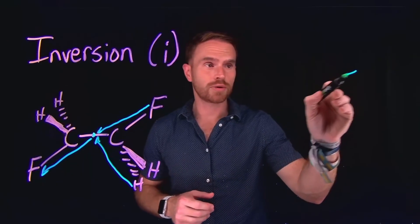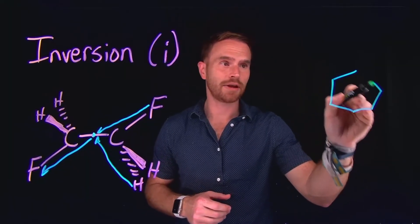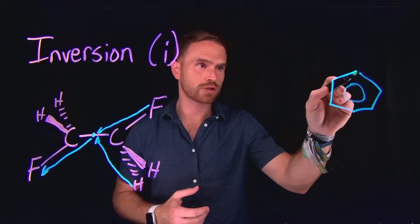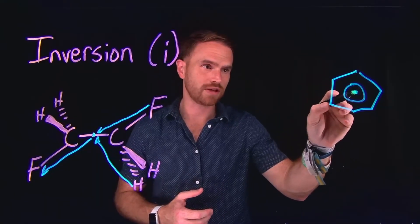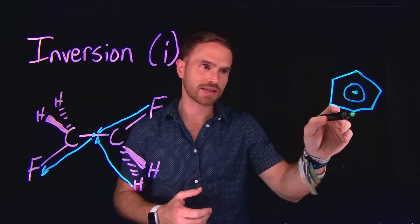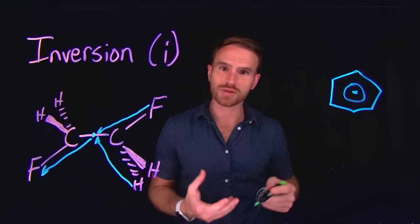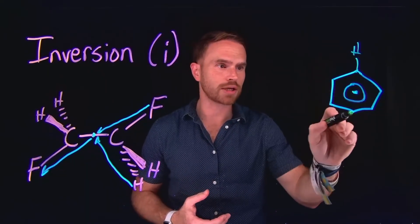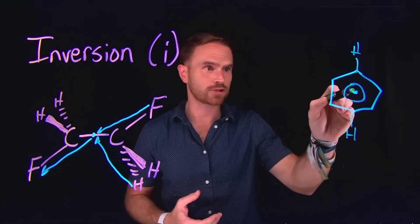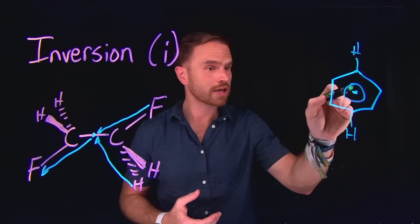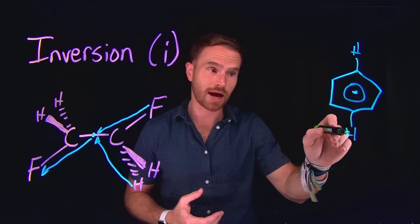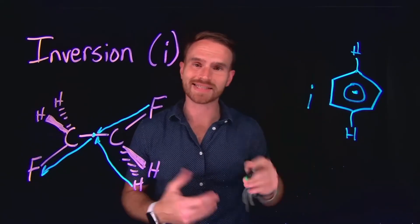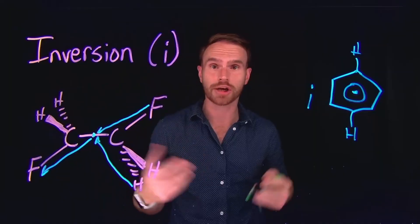Benzene is another example of a molecule that has a center of inversion. If we were to go straight through the center of the benzene molecule and come out the other side, all of the carbon atoms would still be positioned at the exact same location, and the same would be true for the hydrogen atoms. Going through the center and coming out equidistant on the other side, the molecule would look the exact same — therefore it has a center of inversion.